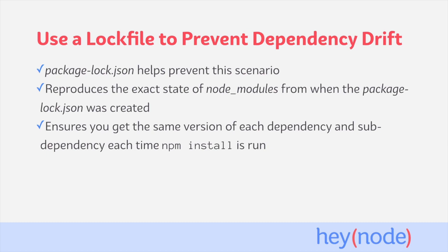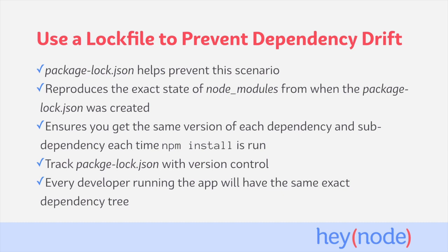package-lock.json ensures that you get the same version of each dependency and sub-dependency each time you run npm install. To be useful, you should track your package-lock.json file in your version control system. That way, the file is distributed with your project, and every time someone runs npm install, they will get the exact same version of the dependency tree — eliminating version drift and the hard-to-debug issues that come with it.